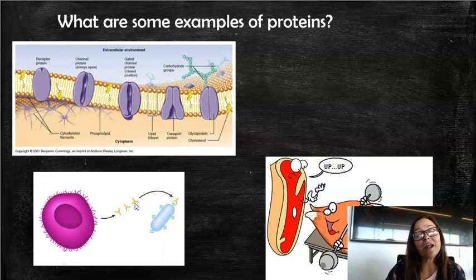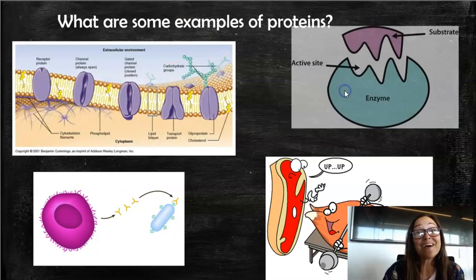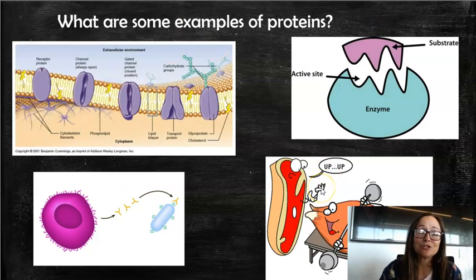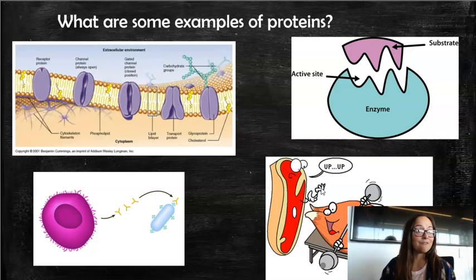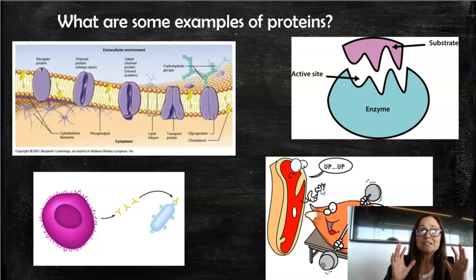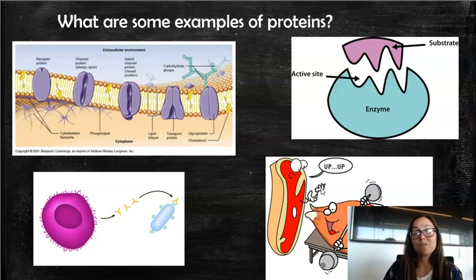We also have our antibodies in our immune system. Our immune system relies on proteins. And then we have enzymes. Enzymes are super important in the functioning of our bodies and life on earth. Enzymes are specialized proteins that help to speed up chemical reactions in our bodies.